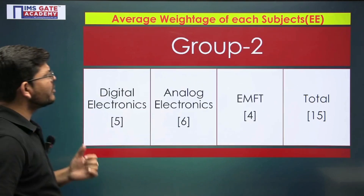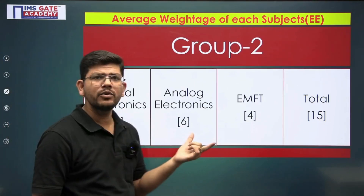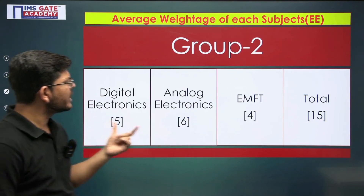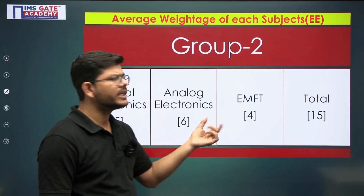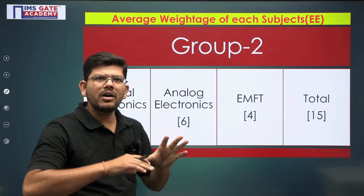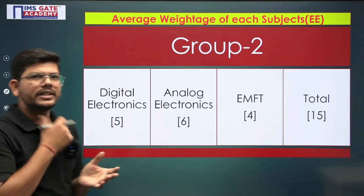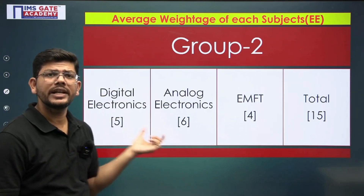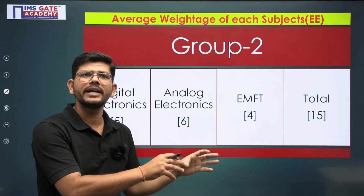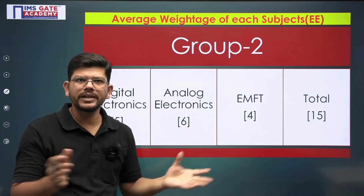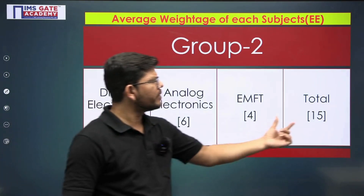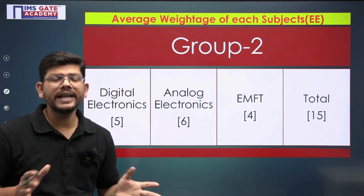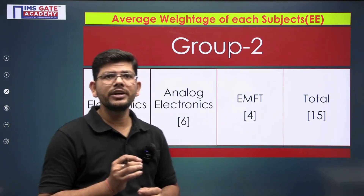Group two includes Digital Electronics, Analog Electronics, and Electromagnetic Field Theory — somewhat unorthodox subjects with no strong link to each other. They are independent subjects you can pick up and prepare at any time. Their combined weightage is around 15 marks. If you want a good rank in GATE, you should not be ignoring any of these subjects.